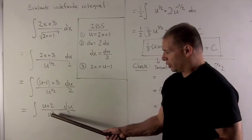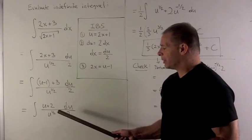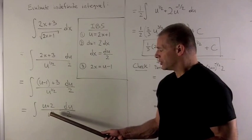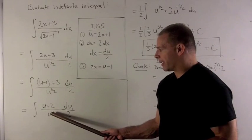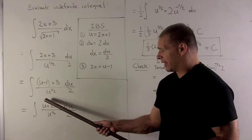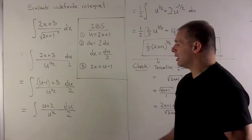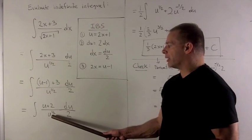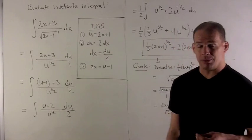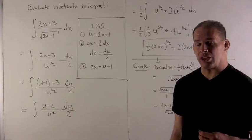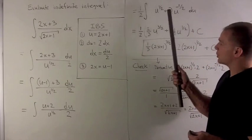Now if I divide u to the 1 half into each of these, this is u to the 1. So the idea is bringing that up as a minus 1 half, and that's 1 minus 1 half, which gives me 1 half for the exponent on the first term. For the second term, I flip it up, it becomes a minus sign, so I get u to the minus 1 half times our 2.